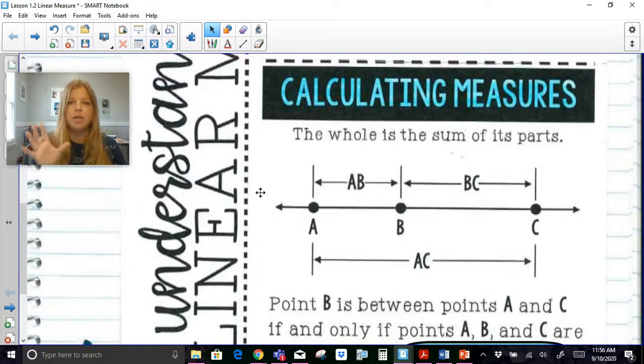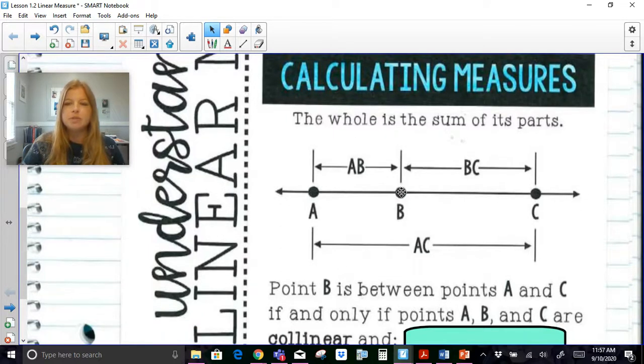Okay so the second part of this past just measuring is knowing how to measure when you have a part part and a whole. So here I have this entire segment of AC from endpoint to endpoint AC and I have point B which is somewhere in between A and C and notice I don't have any actual values for this, but it says the whole is the sum of its parts. So it says point B is between points A and C if and only if points A, B, and C are collinear. We've already learned that collinear means that there are points on the same line.